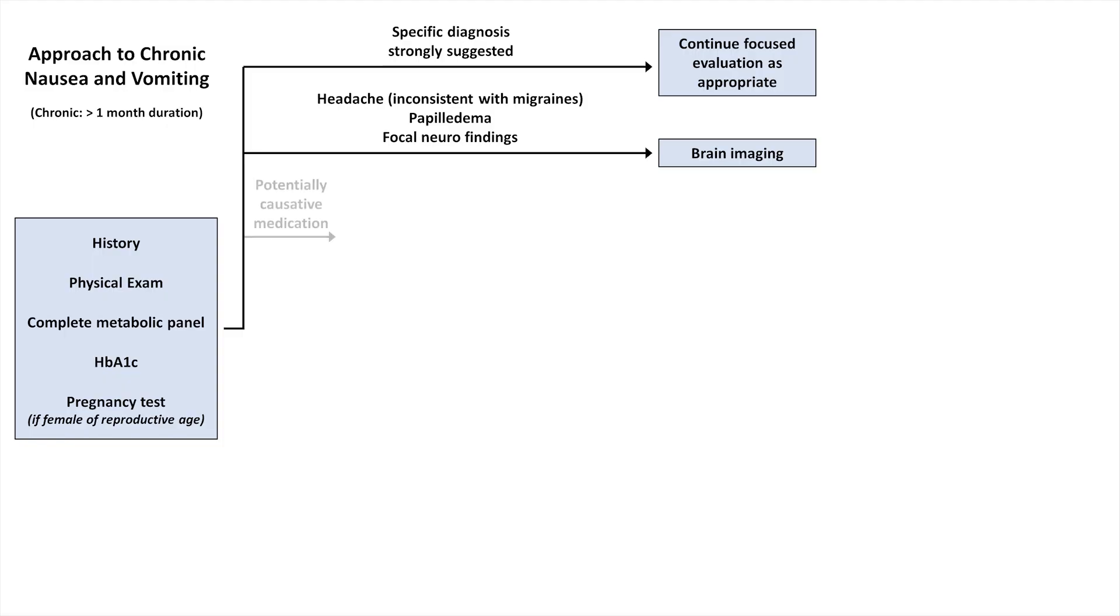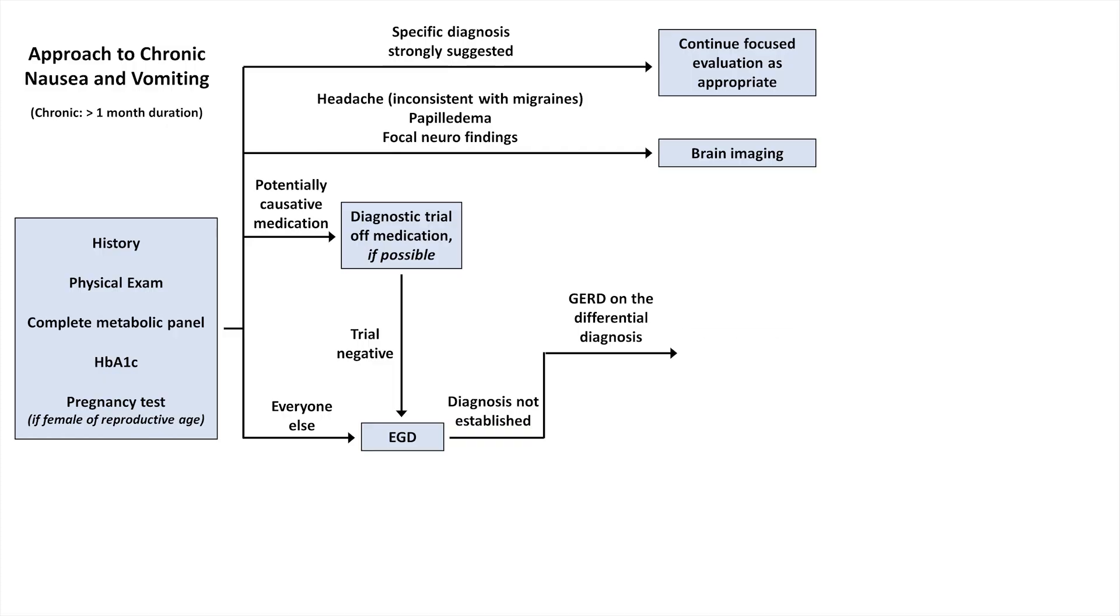If the patient is on a potentially causative medication, there should be a diagnostic trial off the medication if this is possible. For everyone else, and in those for whom a diagnostic trial of potentially causative med was not helpful, get an EGD. If the diagnosis is not established from EGD, and GERD is on the differential diagnosis based on the history, the next step is esophageal pH monitoring. If this is negative, or GERD was not on the differential diagnosis to begin with, the next steps are a gastric emptying scan and a CT of the abdomen and pelvis.